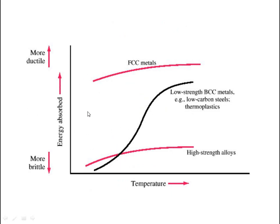This is the graph. Horizontally there is temperature and vertically there is energy absorbed. More energy absorbed means more ductile, and less energy absorbed means more brittle. FCC metals are more ductile, shown by one curve, while BCC metals — at low temperature are brittle and at high temperature are ductile. This curve is for high strength alloys, and these represent brittle materials.